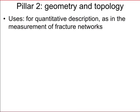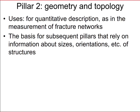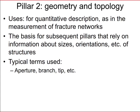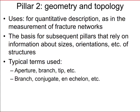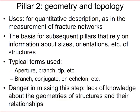Geometry and topology is used for quantitative description. If you want a quantitative description of a fracture network, there are different parameters you might want to describe. It is also the basis of subsequent pillars that rely on information about sizes and orientations of structures. Typical terms for individual fractures include aperture, branch, and tip; for sets of structures, terms like branch, conjugate, and en echelon describe how sets relate to each other. The danger of missing this step is a lack of knowledge about geometries and relationships that hinders subsequent studies.